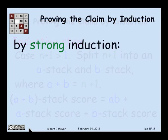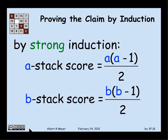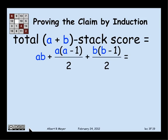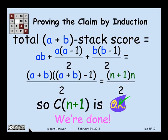So that means that my score on the a plus b stack is going to be this formula, a b plus a times a minus 1 over 2 plus b times b minus 1 over 2. So you simplify that to organize it so it's a plus b times a plus b minus 1, which is exactly n plus 1 times n over 2, which is what we were trying to prove. We've proved c of n plus 1. The inductive step is complete. And indeed, we've proved that no matter how big the stack is, your score comes out the same.